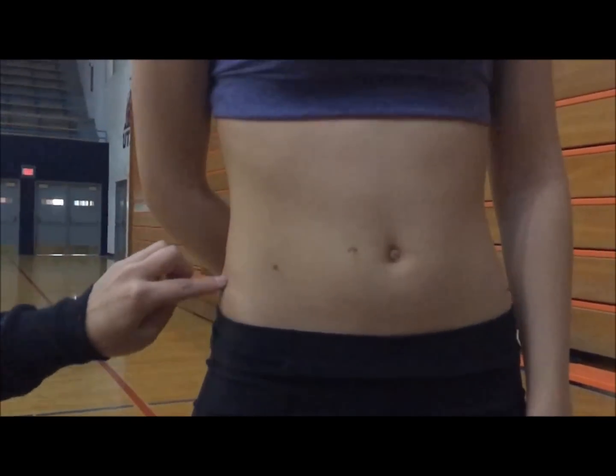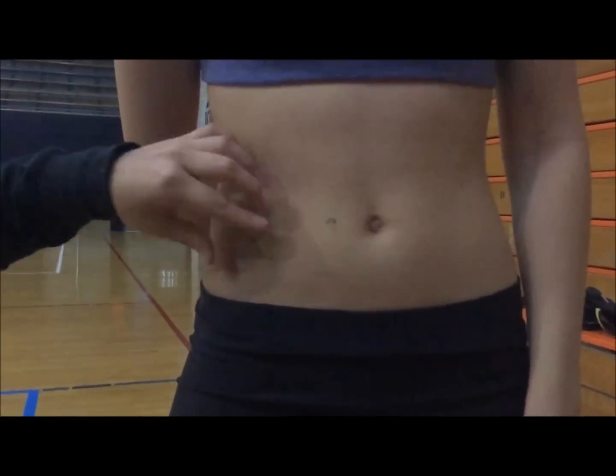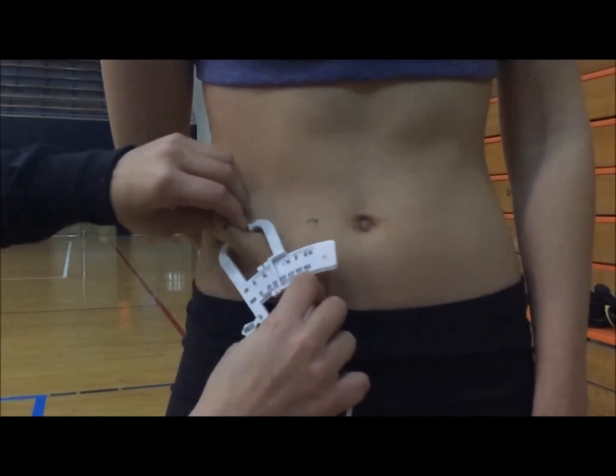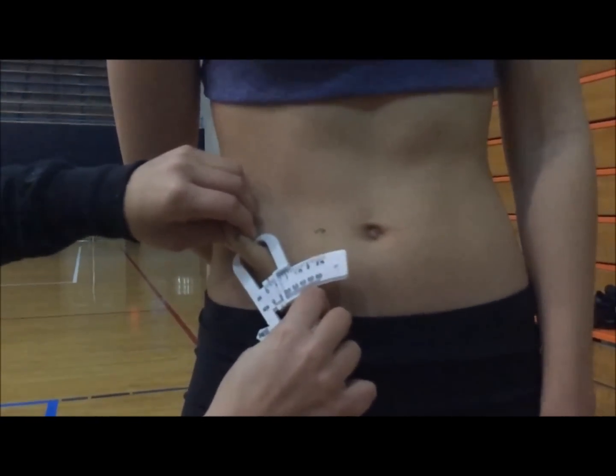Next, we will be doing the suprailiac, which is a diagonal fold. Make sure you separate skin from the muscle, maintain the pinch, and take your reading.